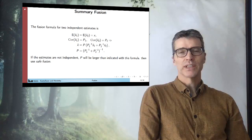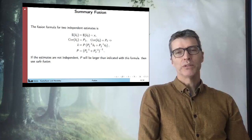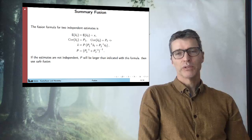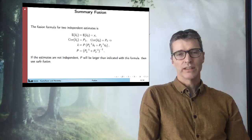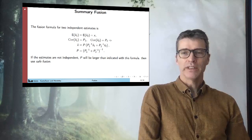So to sum up, the sensor fusion formula assumes that you have two independent estimates, x hat 1 and x hat 2, and you want to combine them into one estimate, x hat. So again, if the estimates are not independent, then P will be large as an indicator with this formula and you have to use safe fusion. That will be presented in another lecture.